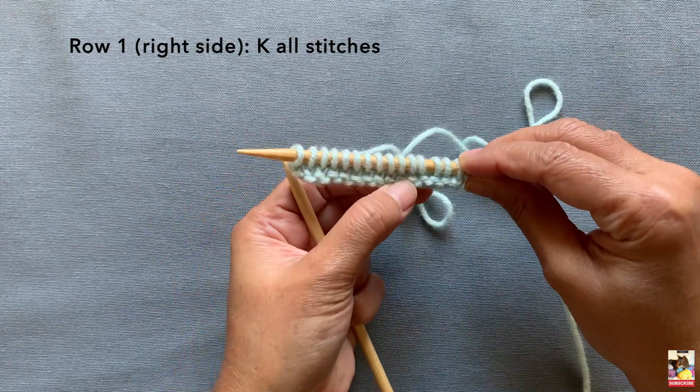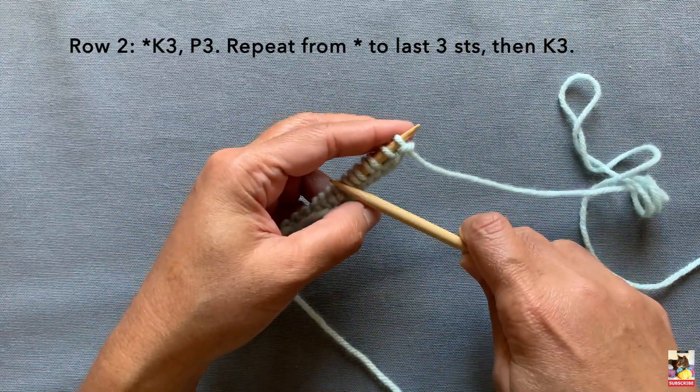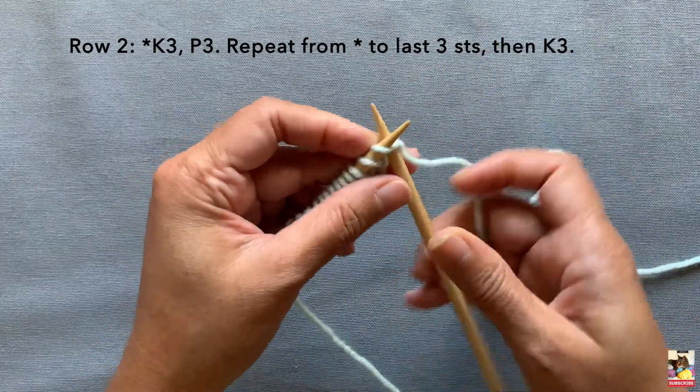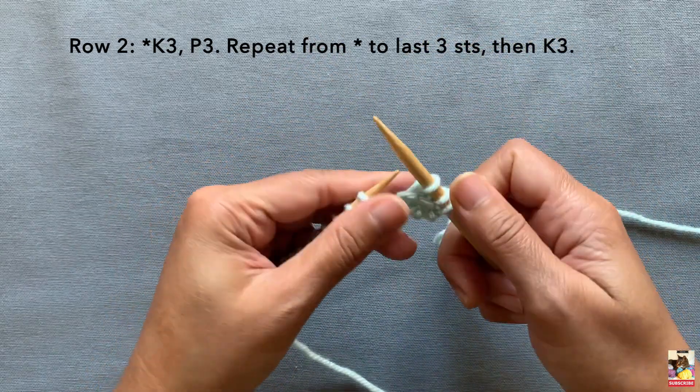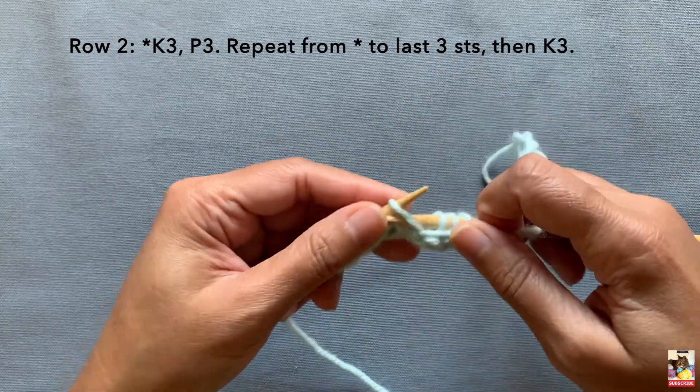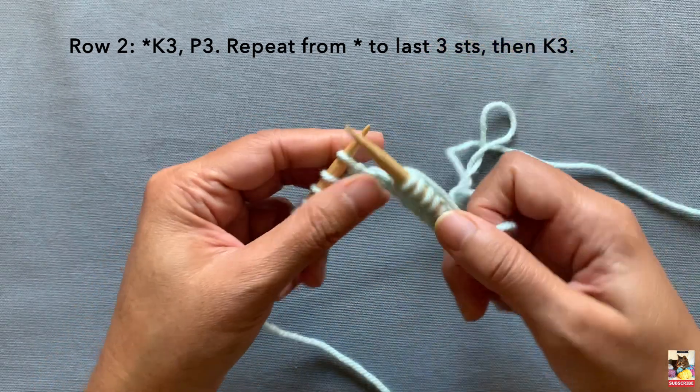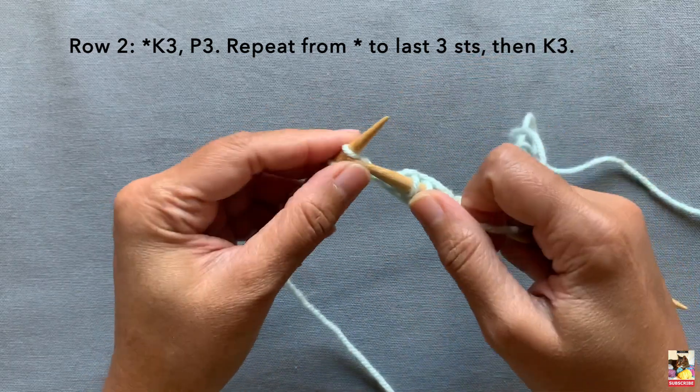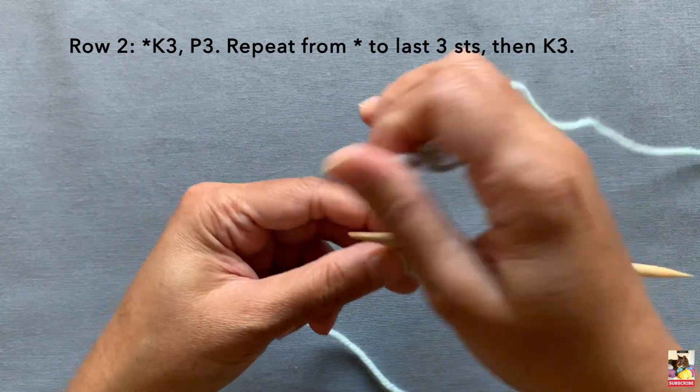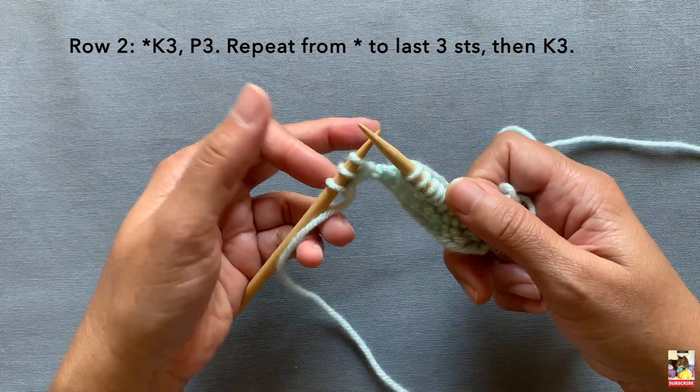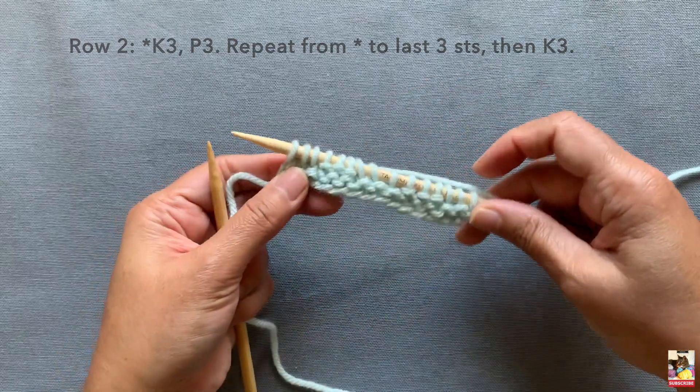Coming to the end of row one. As you can see, it's very simple, just a regular knit all the way across. You're going to turn your work. Row two: the pattern goes you're going to knit three, purl three all the way to the last three stitches. Here we go, we're going to knit the first three stitches, and then purl the next three stitches—one, two, and three. That is the pattern repeat all the way to the last three stitches. Let's see that a few more times: knit one, two, three, and purl one, two, three. You keep doing that till you get to the last three stitches. The last three stitches you're just going to knit—one, two, and three.